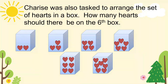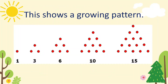What do you notice, children? Right — the number increases. That shows a growing pattern. This one too shows a growing pattern: one dot, then three dots, then six, then ten, and fifteen. The number increases, so it's a growing pattern.